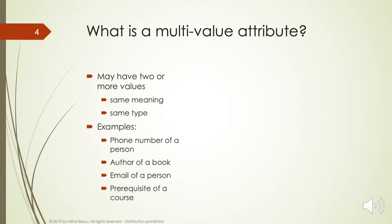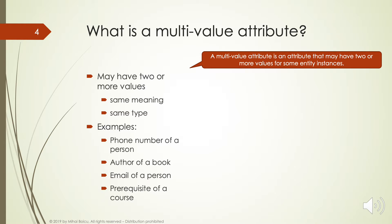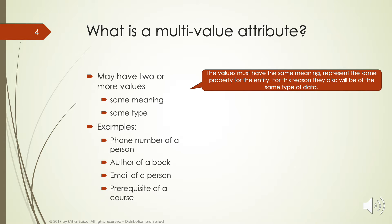A multi-value attribute is an attribute that may have two or more values for some entity instances. The values must have the same meaning and represent the same property for the entity. For this reason, they will also be of the same data type.